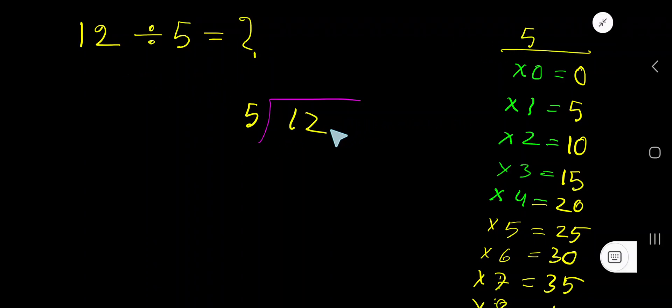12 divided by 5. Here 5 is a divisor, so we need the multiplication table of 5. 5 times 0 is 0, 5 times 1 is 5, 5 times 2 is 10, 5 times 3 is 15. To find out the multiplication table of 5 easily, just add 5 with the previous value: 0 plus 5 is 5, 5 plus 5 is 10, 10 plus 5 is 15.